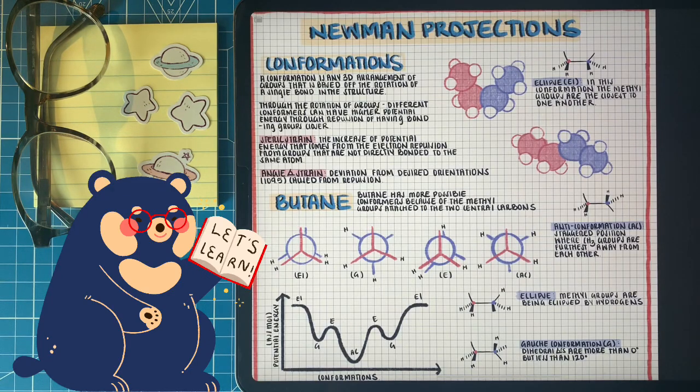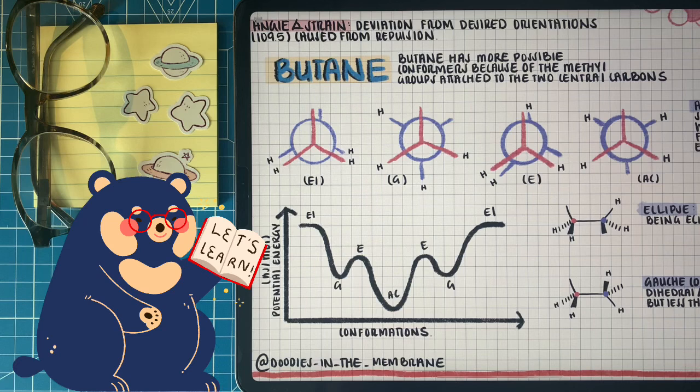So instead of having two different states, we're going to have four different states because it matters what is eclipsing what. The closer we have the two methyl groups to each other, the greater the repulsive forces. At each stage of the rotation, we're going to have a different scenario of potential energy for butane. So let's naturally go through all this data, the conformations of butane.